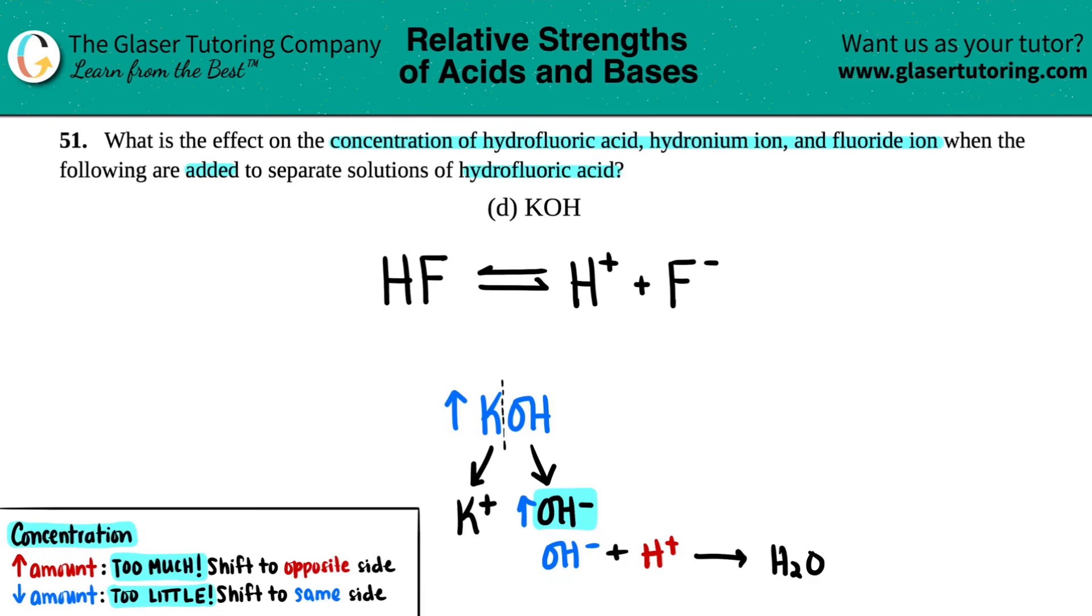Now, remember the OH minus is going to be grabbing the H plus in solution to produce water. So if I have more of these, it's going to latch on to the H plus to produce the water. So what's going to happen in terms of the H plus? It's going to drop because all the H plus is now linking up with the OH minus to turn into water.